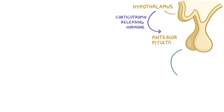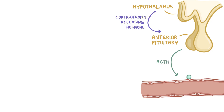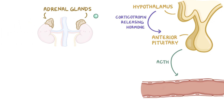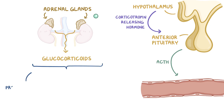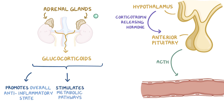As a quick recap: when corticotropin-releasing hormone is released by the hypothalamus, this stimulates the anterior pituitary to release adrenocorticotropic hormone into the bloodstream. ACTH then travels to the adrenal gland and triggers the production of glucocorticoids. This promotes an overall anti-inflammatory state, as well as stimulating metabolic pathways like lipolysis, gluconeogenesis, and proteolysis to help maintain normal concentrations of glucose in the blood. Finally, glucocorticoids travel to the hypothalamus and inhibit the release of corticotropin-releasing hormone and ACTH, inhibiting the hormonal cascade.